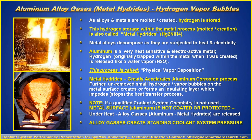Alloy aluminum gases — what's called metal hydrites or hydrogen vapor bubbles. As alloys and metals are molten and created, hydrogen is stored. This hydrogen storage within the metal process through molten creation is called metal hydrites. Metal alloys decompose as they are subject to heat and electricity. Aluminum is a very heat sensitive and electroactive metal. Hydrogen originally stored in the metal when it was created is released like a water vapor. This process is called physical vapor deposition — in other words, breakdown. The metal hydrates greatly accelerate the aluminum corrosion process. Furthermore, these unremoved small hydrogen vapor bubbles on the metal surface create or form an insulating layer which impedes or stops the heat transfer process.